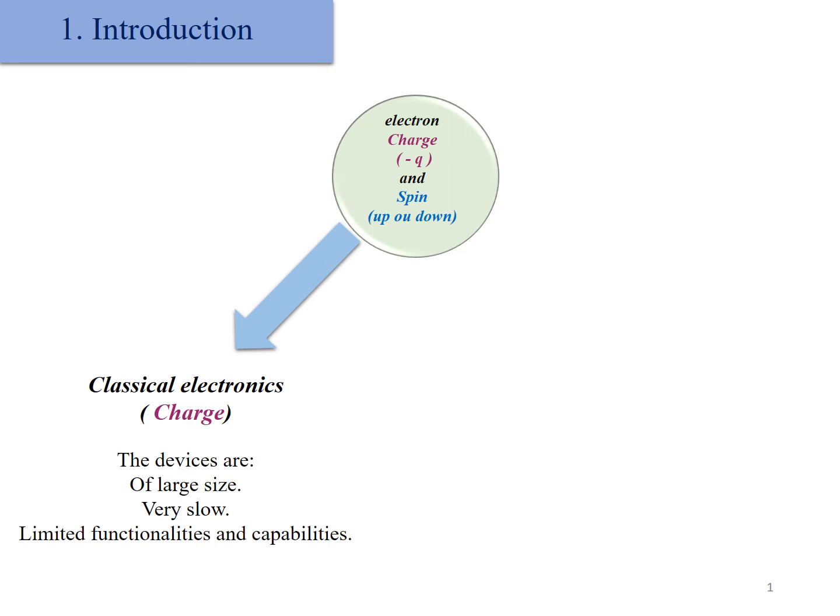As it is known, the electron has a charge and spin with two orientations, up and down. Practical electronics uses only the charge of the electron, and the devices associated with it are very large, slow, and with limited functionalities and capabilities.